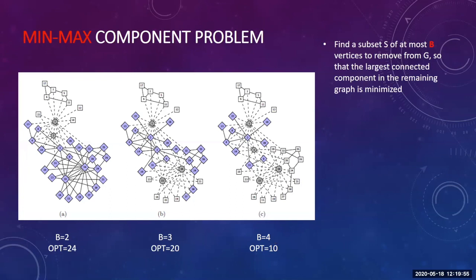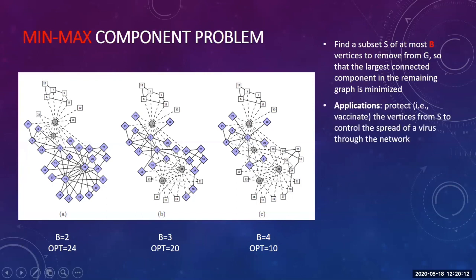For example, if I have a budget to remove two vertices, I can choose vertices 1 and 2, after which the largest component, denoted in blue, will have size 24. If I slightly increase the budget to 4, then the network deteriorates and the largest component goes down significantly to a size of only 10.